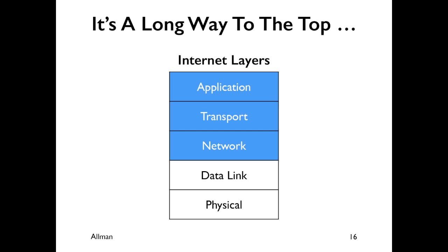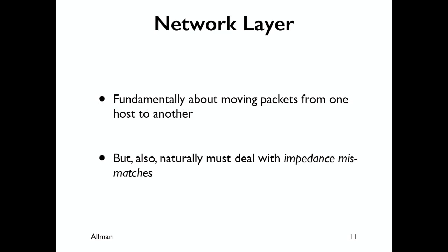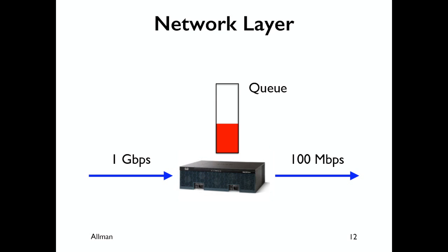So I go back to my picture. What I want to do is step through some of our work at these different layers — I'm only going to concentrate on the upper three layers. My advisor would call those the computer science layers. The bottom two layers are done by people smarter than me. Starting at the network layer: it's fundamentally about moving packets from one host to another across some network — it's about routing. At first blush it shouldn't affect performance much, but there is one place where it naturally does: a router with a gigabit per second interface and a 100 megabit per second interface.